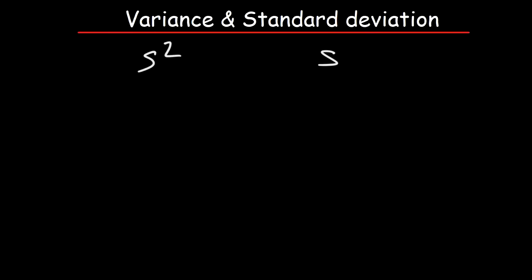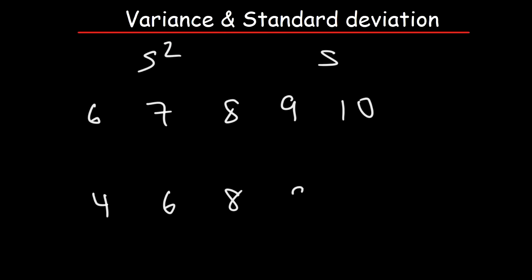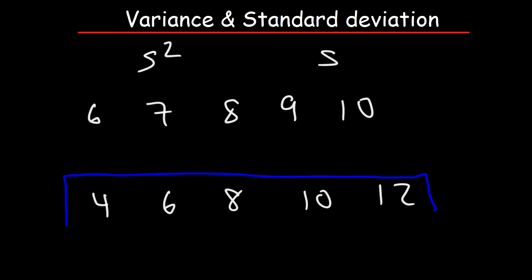Let's say we have the first list of numbers: 6, 7, 8, 9, 10, and let's compare it to another list of numbers: 4, 6, 8, 10, and 12. Which list has a higher standard deviation — the first one on top or the second one on the bottom? It's going to be the second one. Notice that the numbers are more spread out from the mean — there's more variation.